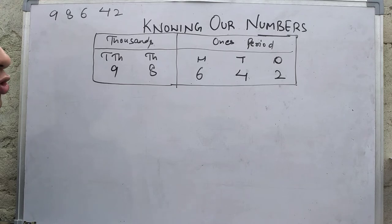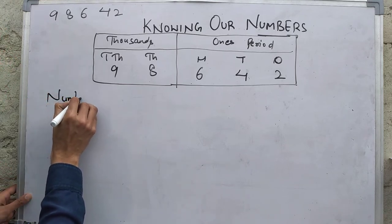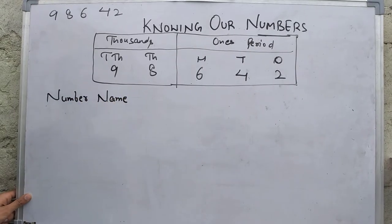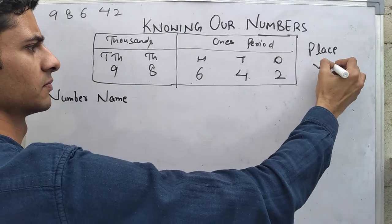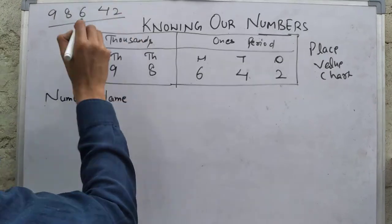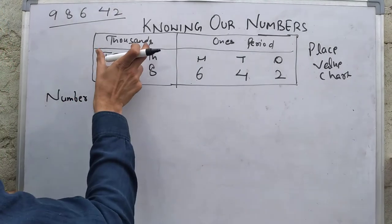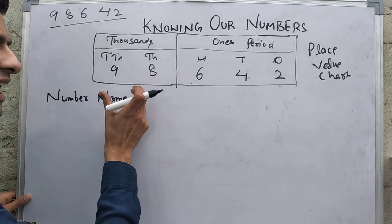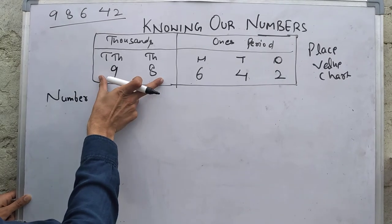Let us understand how to write the number name. To write the number name, initially you can place the required number into a place value chart. Suppose I am having this number — I have placed it in a place value chart. There is a thousands period and a ones period. When you are giving a name to it, you will read one period together.